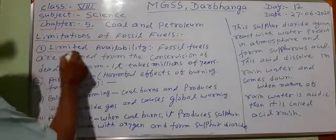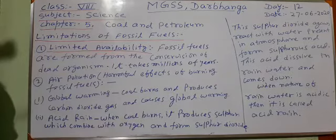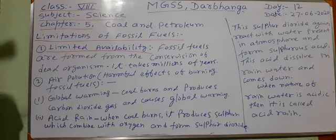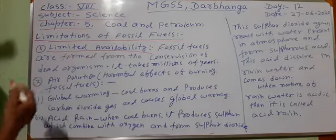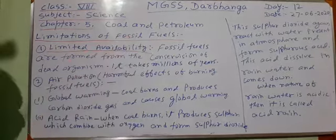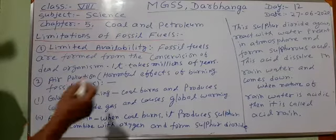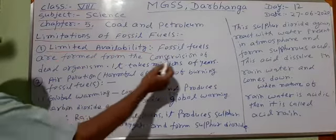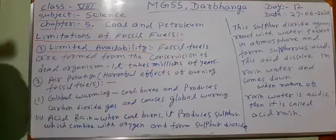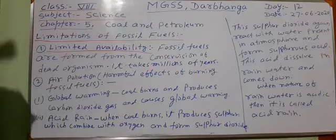First is the limited availability. Limited availability means fossil fuels are available in nature in limited quantity. It is not present in unlimited quantity. There are two types of resources: exhaustable and inexhaustable. All the fossil fuels are exhaustable natural resources. Fossil fuels are formed from the conversion of dead organic matter. It takes millions of years.